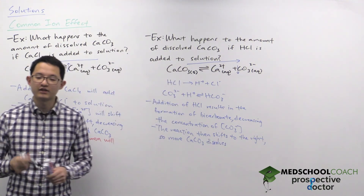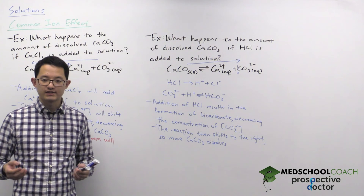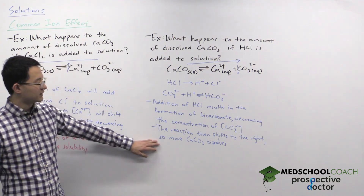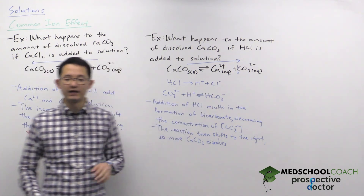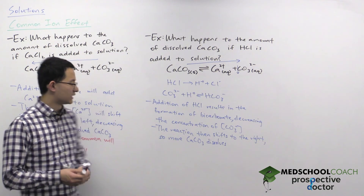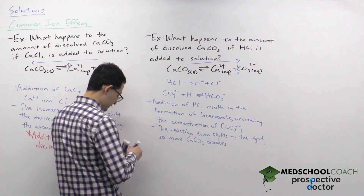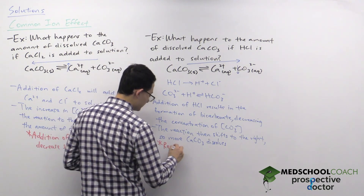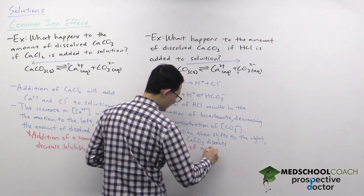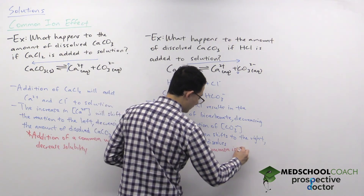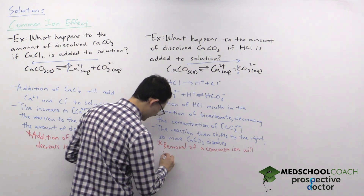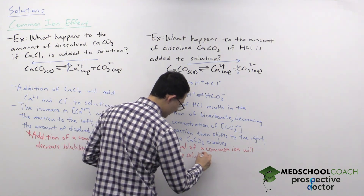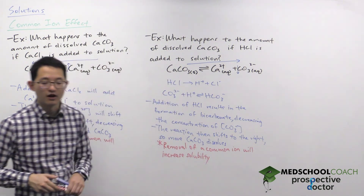This is essentially the opposite of our first example. In the first example, adding a common ion decreased solubility. But if you remove a common ion, that's going to increase the solubility. So removal of a common ion will increase solubility. And that's how the common ion effect works.